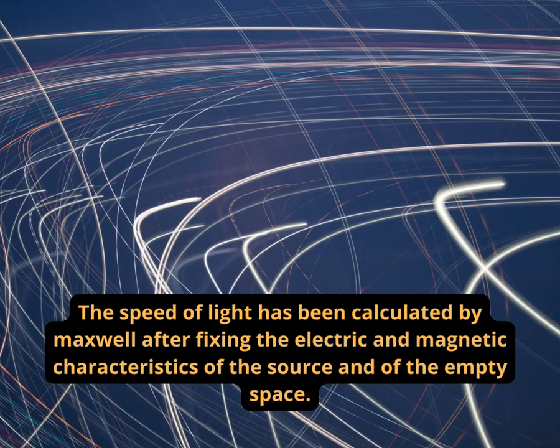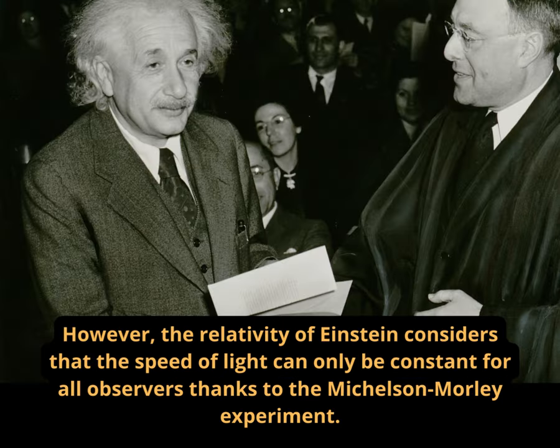The speed of light has been calculated by Maxwell after fixing the electric and magnetic characteristics of the source and of the empty space. However, the relativity of Einstein considers that the speed of light can only be constant for all observers thanks to the Michelson-Morley experiment.